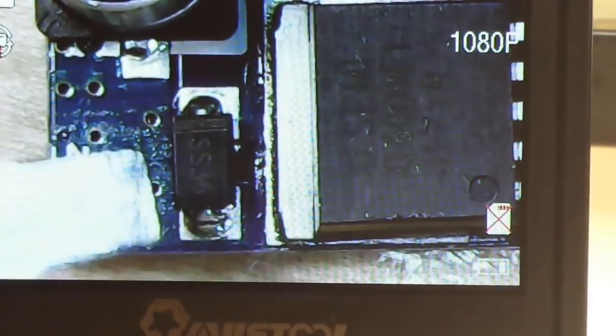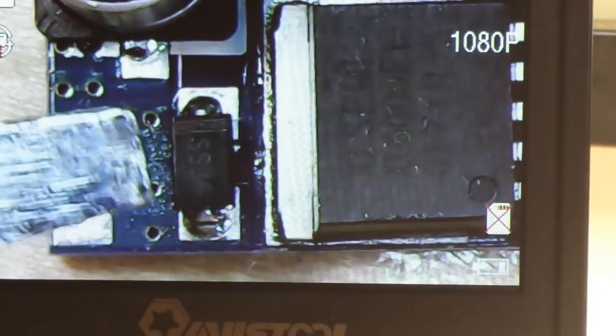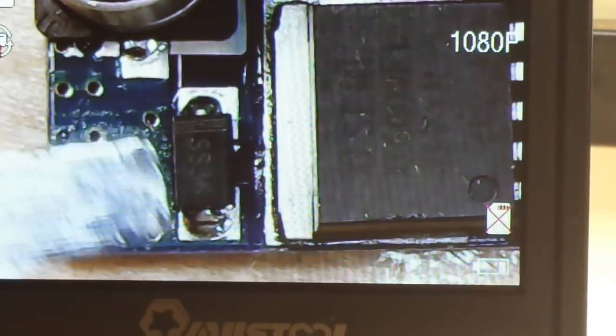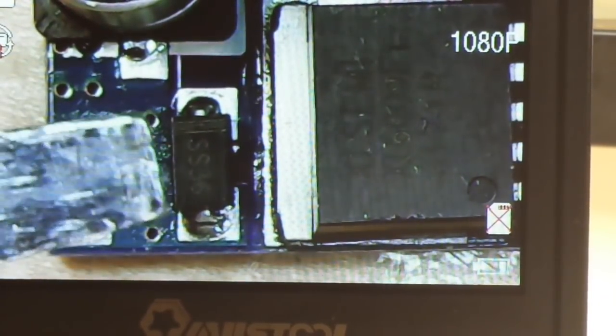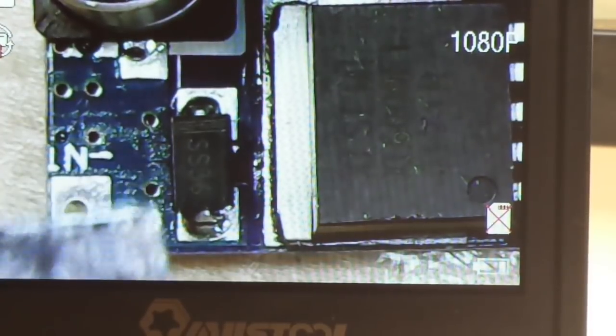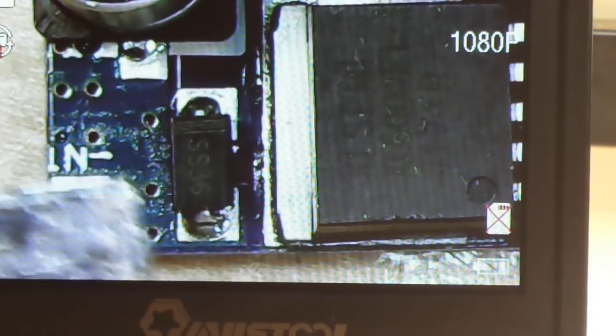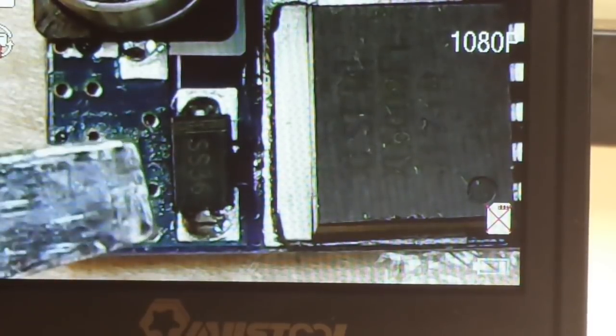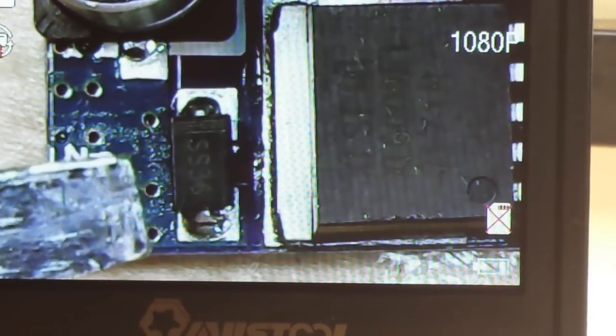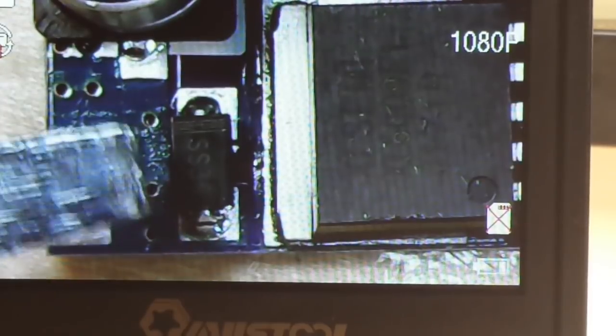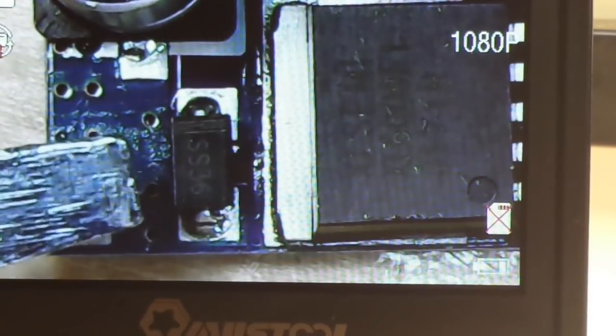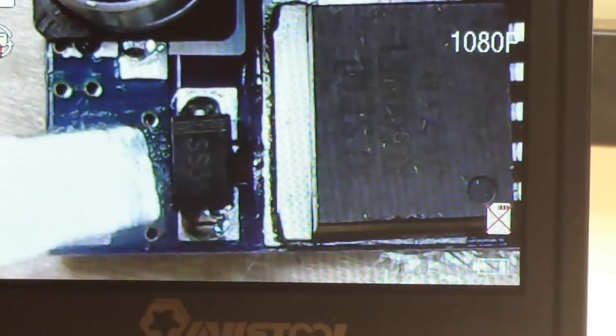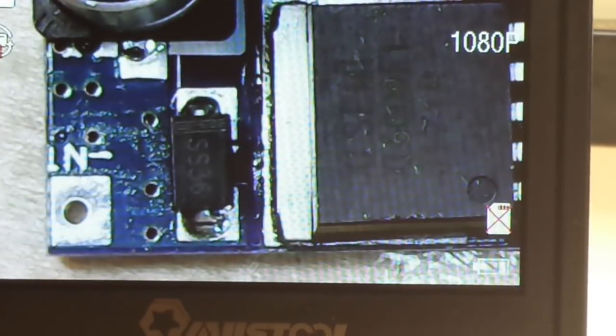That is an SS36 diode. If you just watched my video about the different types of diodes and recovery times, one of the things I said was we don't use Schottky diodes in switch mode power supplies because of their reverse leakage problem. Well, the SS36 is in fact a Schottky diode, so that's a little bit odd.